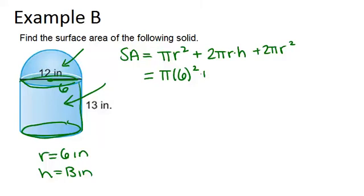We have pi times 6 squared plus 2 times pi times 6 times 13 plus 2 times pi times 6 squared again. So when we simplify this,